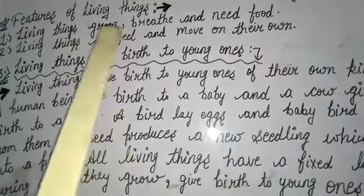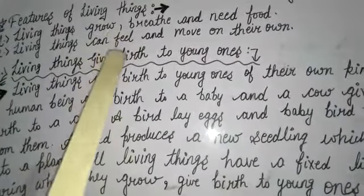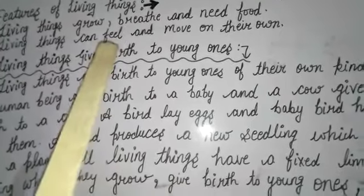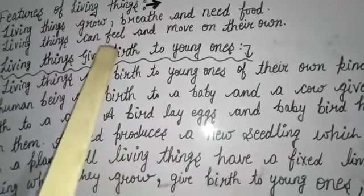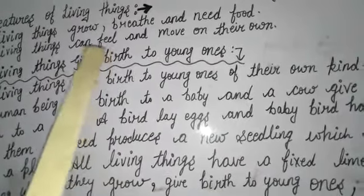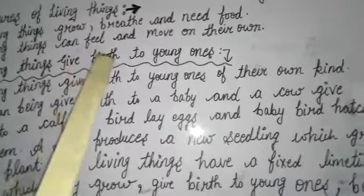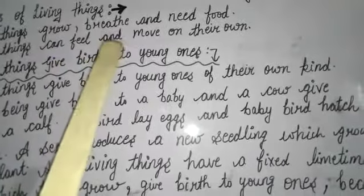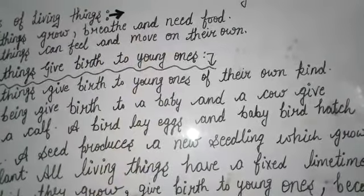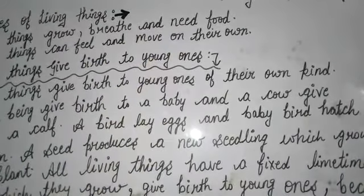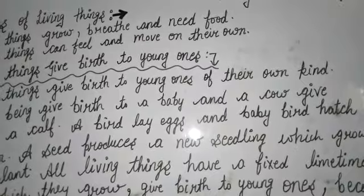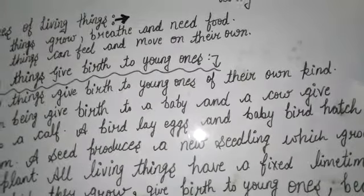Living things हमारे आसपास जो changes हो रहे हैं, उन्हें feel, महसूस कर सकती हैं — कि कोई चीज़ ठंडी है, गर्म है, smooth है, उनको हम feel कर सकते हैं. And living things move on their own — वो जो living things होती हैं, वो अपने आप एक जगह से दूसरी जगह पर move कर सकती हैं.